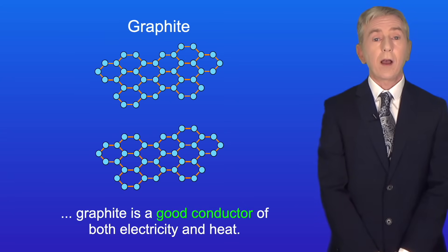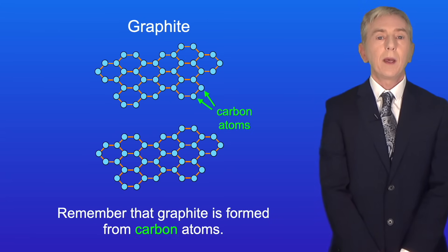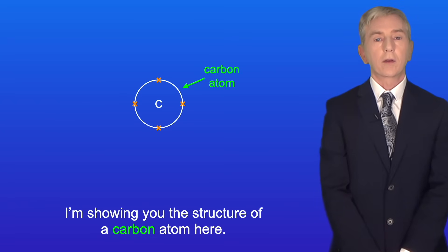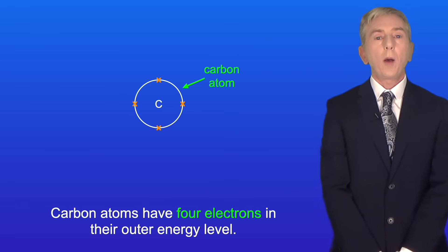Now as I said before graphite is a good conductor of both electricity and heat. Remember that graphite is formed from carbon atoms. I'm showing you the structure of a carbon atom here. Carbon atoms have four electrons in their outer energy level.